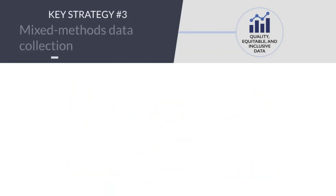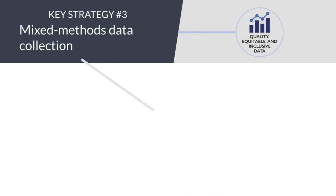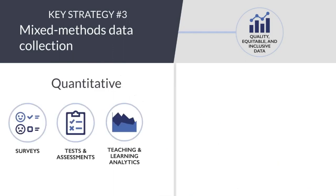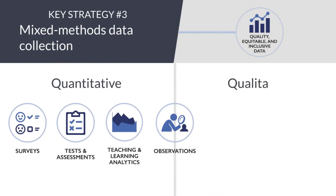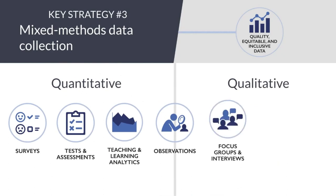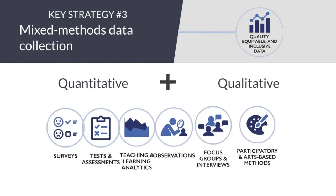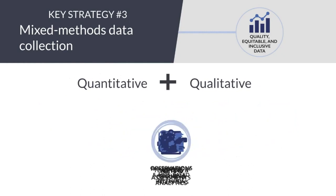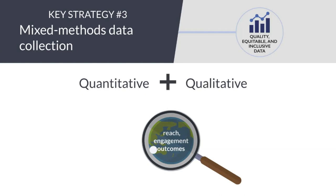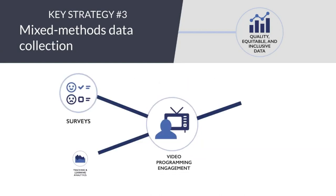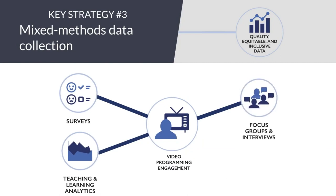Key strategy number three is mixed methods data collection. Quantitative methods include surveys, tests and assessments, teaching and learning analytics, and observations. Qualitative methods include qualitative observations, focus group discussions, interviews, and participatory and arts-based research. Combining quantitative and qualitative methods allows for deeper analysis and greater opportunity to measure intended and unintended reach, engagement, and outcomes. One example for measuring engagement in video programming is combining surveys and learning analytics data with focus groups and voice commentaries.